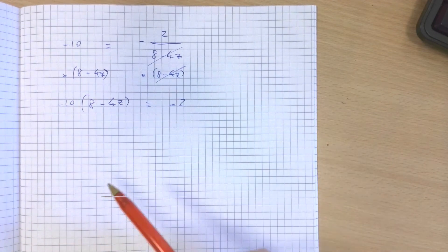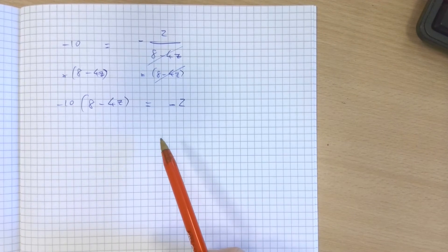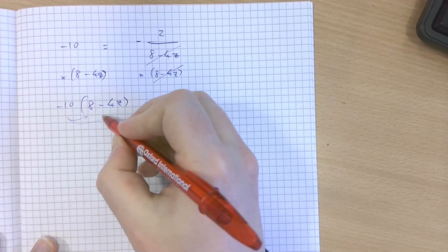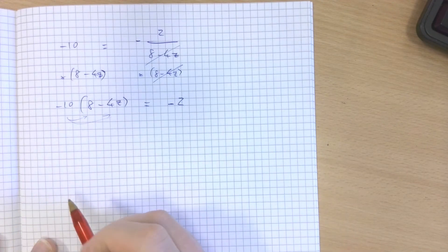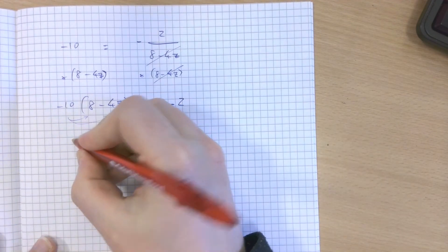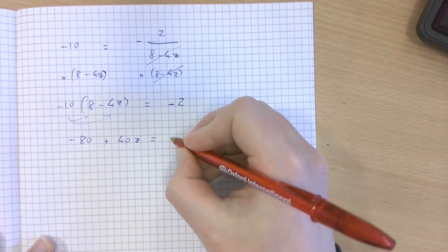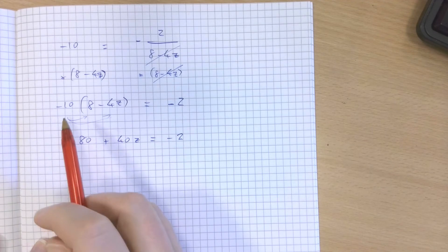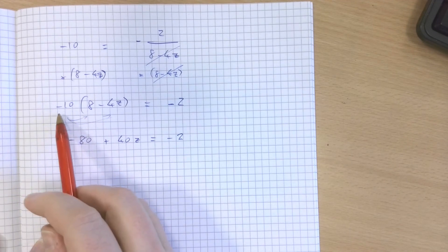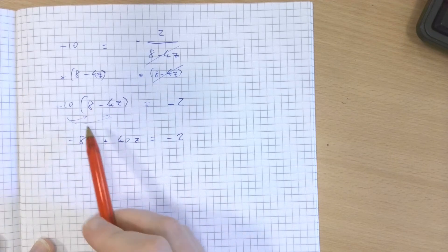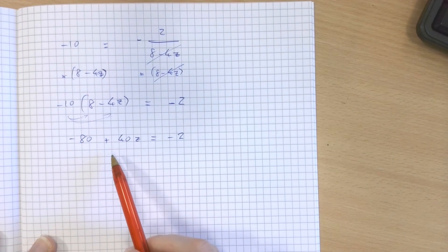A similar sort of situation to the previous question at this point. I'll do this again by multiplying it out, but you can also do this by dividing both sides by negative 10 and then continuing. Minus 80 plus 40z. 10 times 8 is 80, one of them is negative so that would be negative. 10 times 4 is 40z, and because they're both negative that becomes positive.